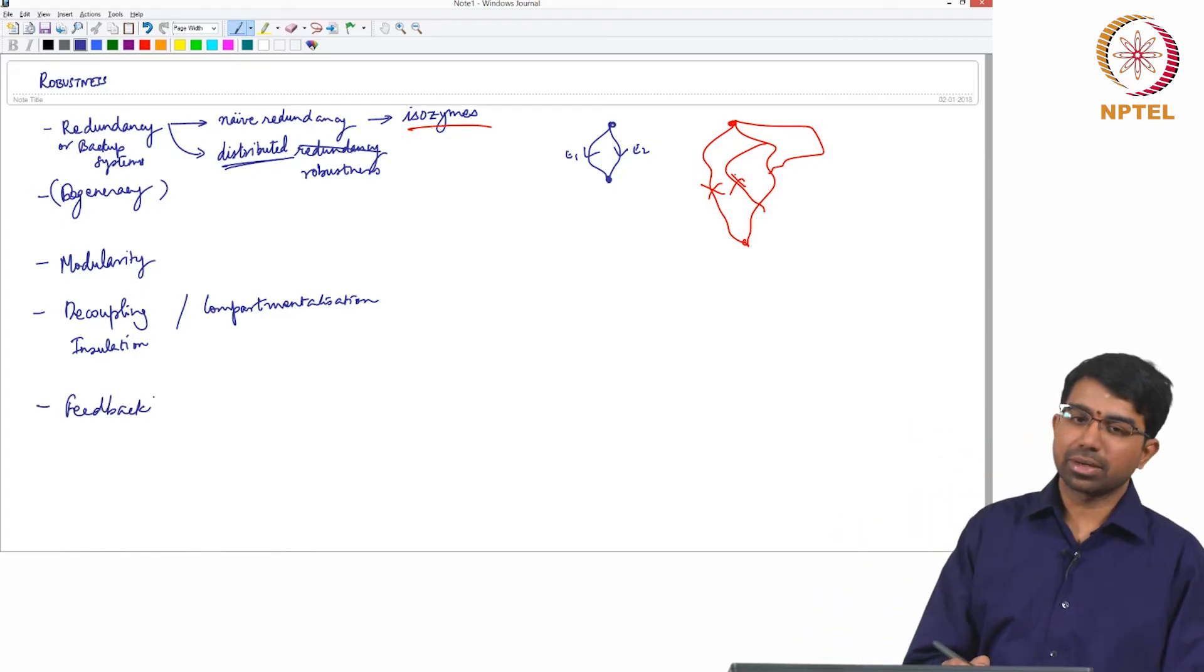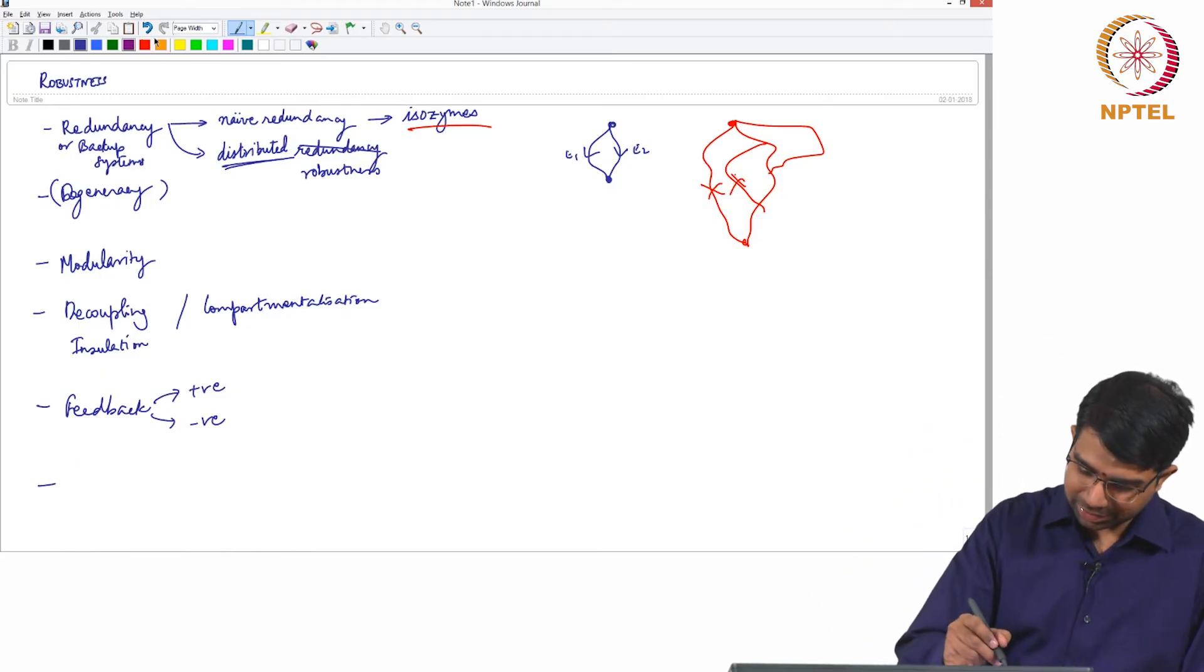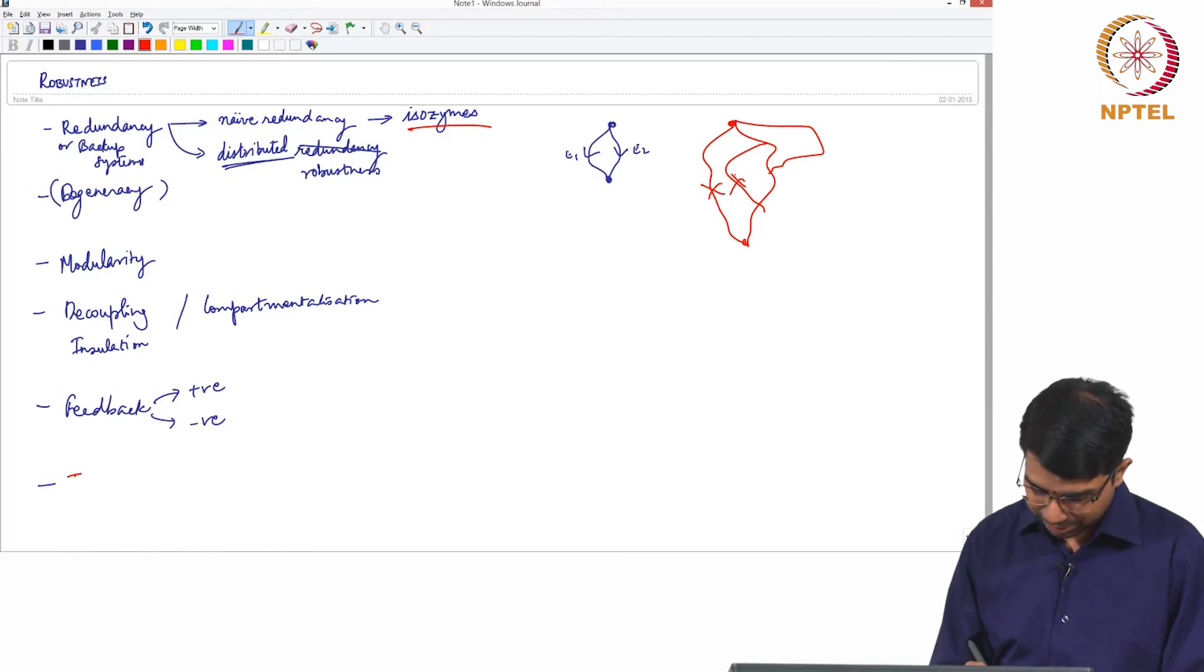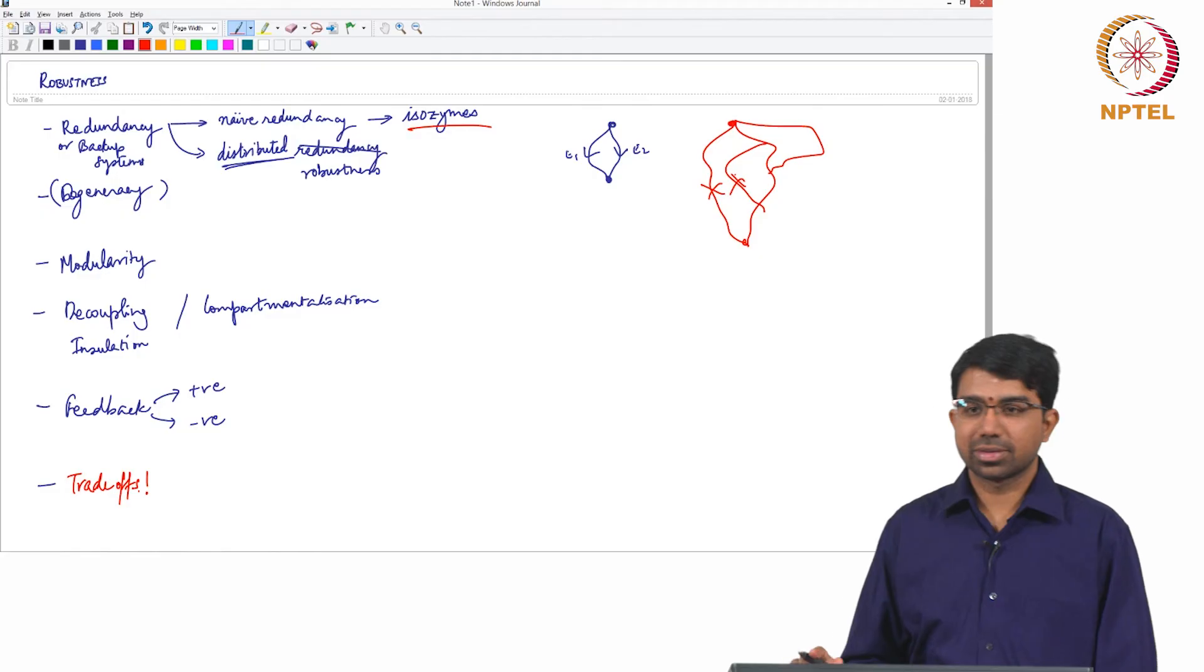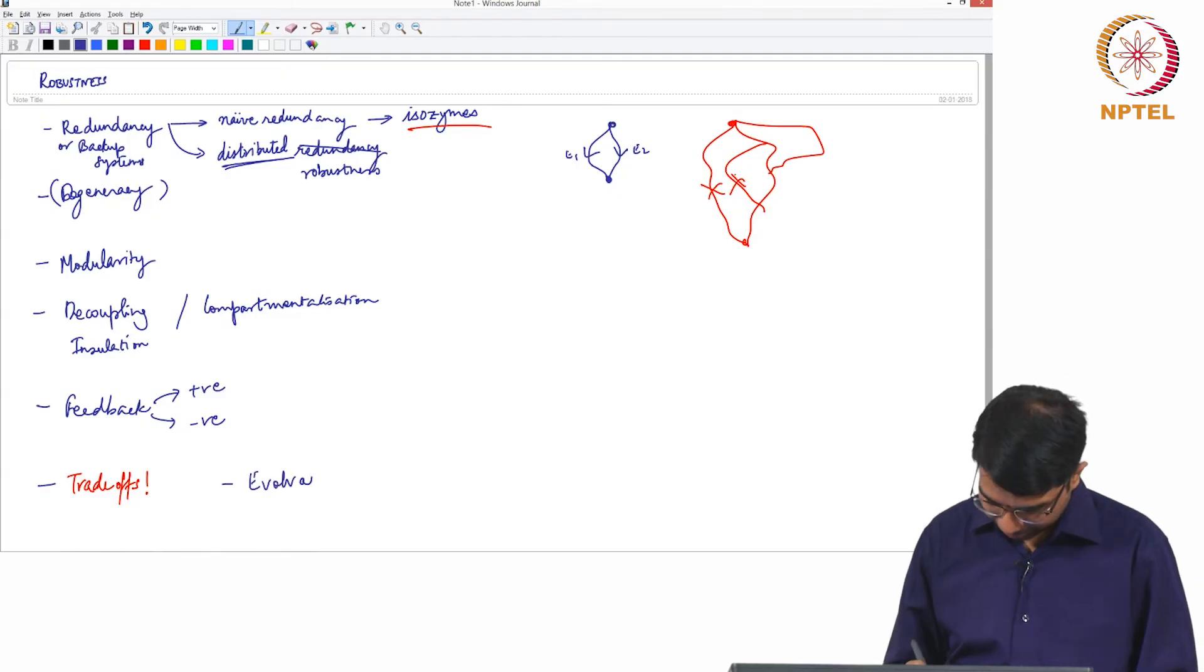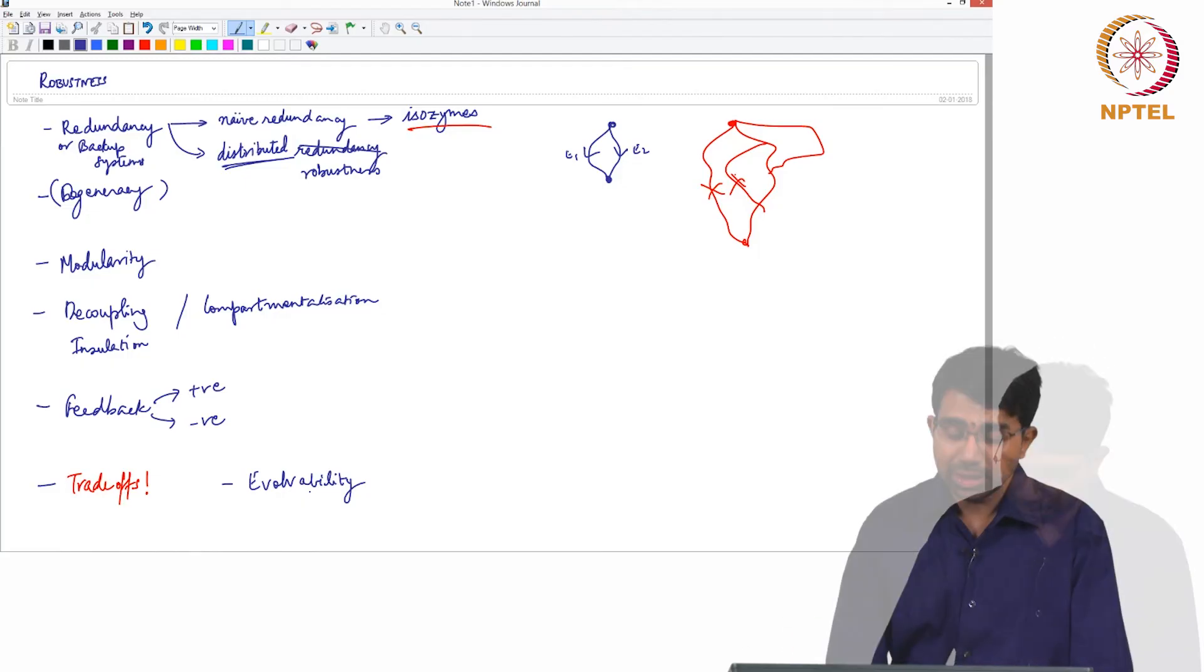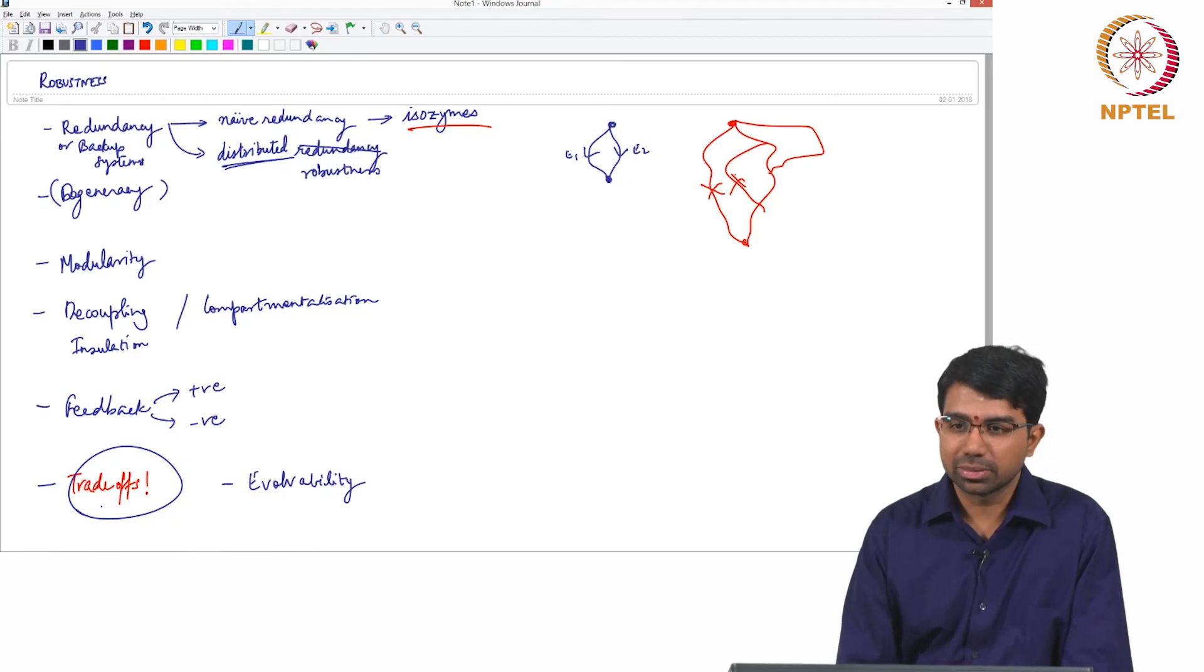So you need to have feedback. And the other thing to really worry about is the trade-offs. Well, evolvability is another very important point, we will get to that. So this almost sounds counter. Robustness is resistance to change, evolvability is ability to change and they go hand in hand in biological systems. We will see how that happens. That is going to be the topic for the next couple of classes. But the thing to understand is there is a lot of trade-offs you need to worry about.